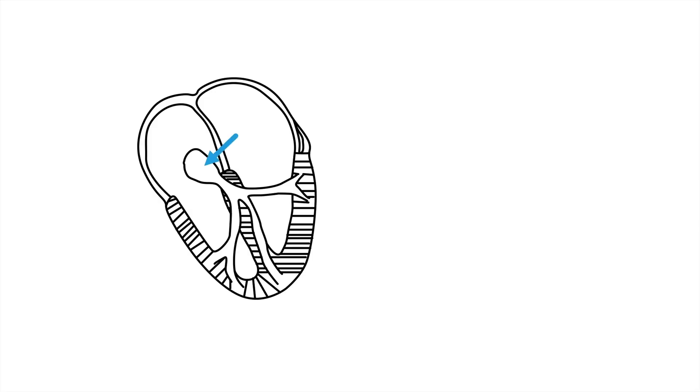This is the AV node, this is the bundle of His, this is the right bundle branch, and this is the left bundle branch with the left anterior fascicle and the left posterior fascicle.